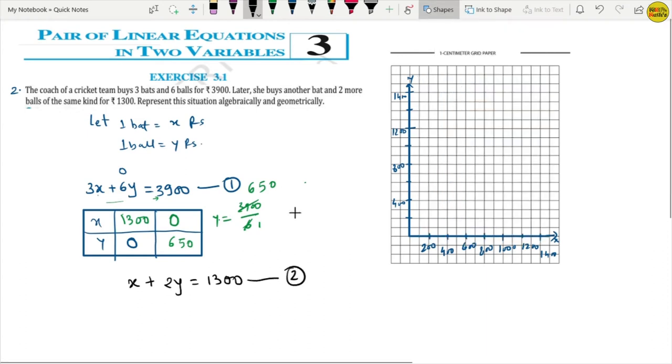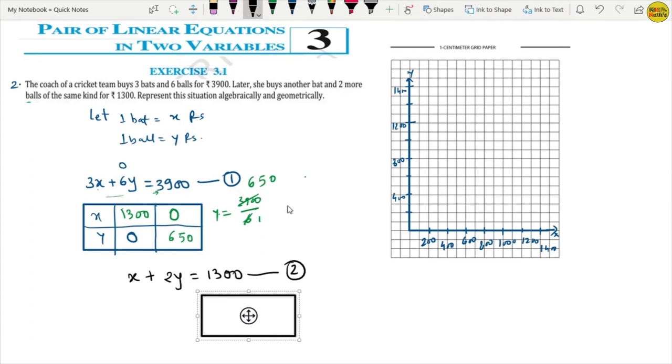Now, let's plot it too. This will also be plotted. So, now let's see what is happening. x, y. If I will keep x's value 0, how much will I get? 2y equals to 1,300. That is y equals to 650. And if I put y equals to 0, how much will I get? 1,300.